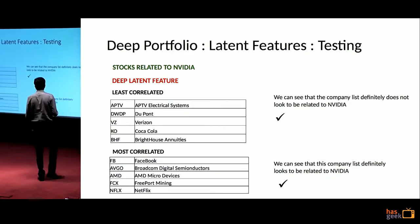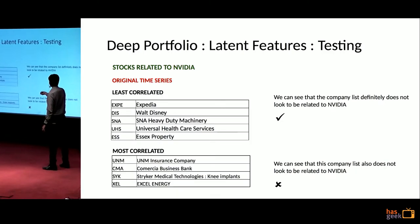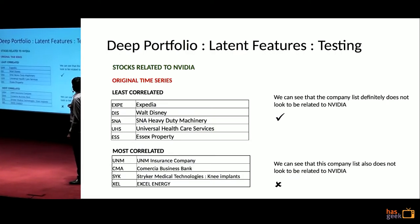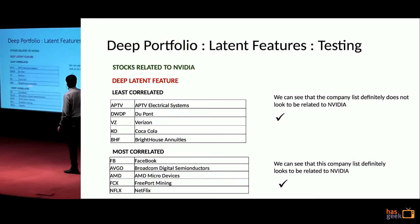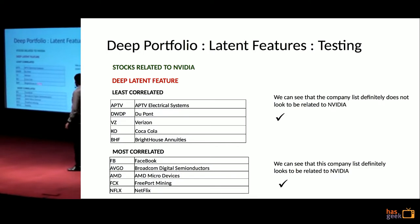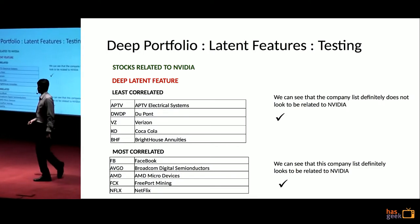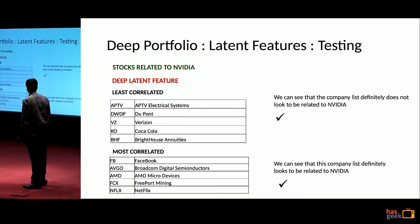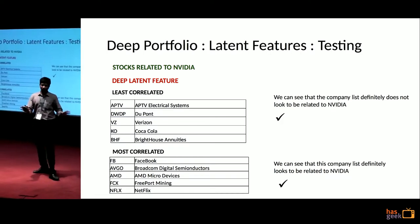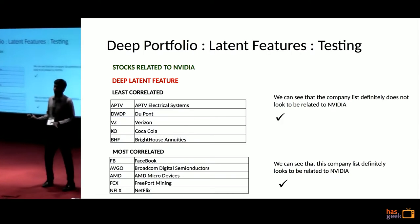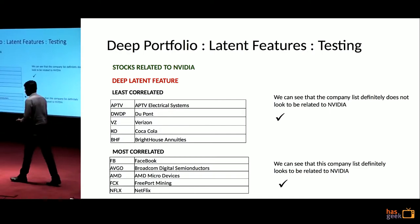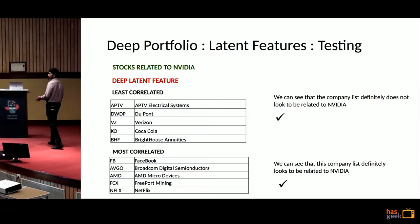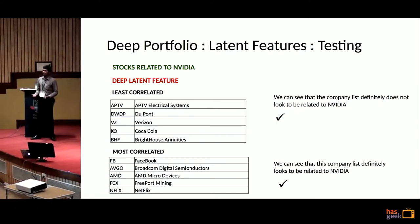Now let us do the same exercise with the latent feature matrix. The least correlated stocks are electrical systems, DuPont, Verizon, Coca-Cola, Brighthouse — which makes sense. The most correlated to Nvidia are Facebook, Broadcom, AMD Micro Devices, Freeport Mining, Netflix. I don't need to tell you that these seem to be related to Nvidia. We have not written very fancy code — we used open source data and were able to gather these patterns.